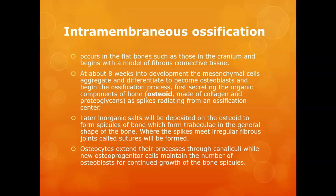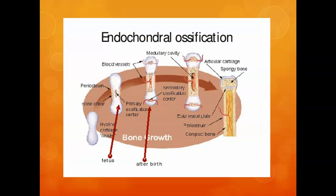Later around the edge the flat bone remodels and becomes compact bone, and in the center it becomes spongy bone. The other way bones grow — more for your appendicular skeleton, your long bones — is through endochondral ossification, where you have a hyaline cartilage model. Early on, the embryo's bones aren't bones yet; they're cartilage, forming a cartilaginous skeleton.